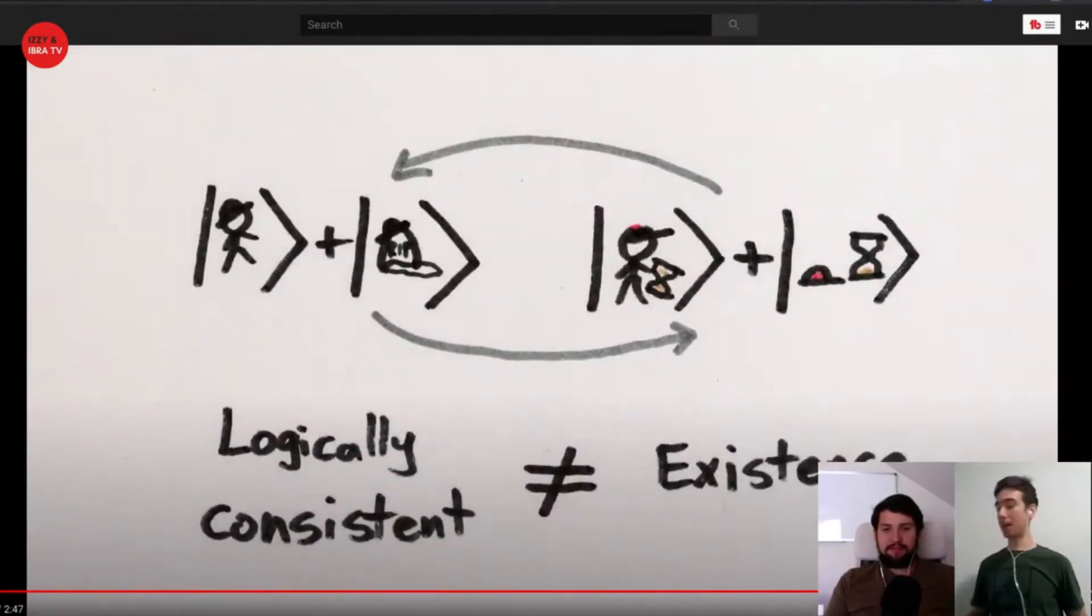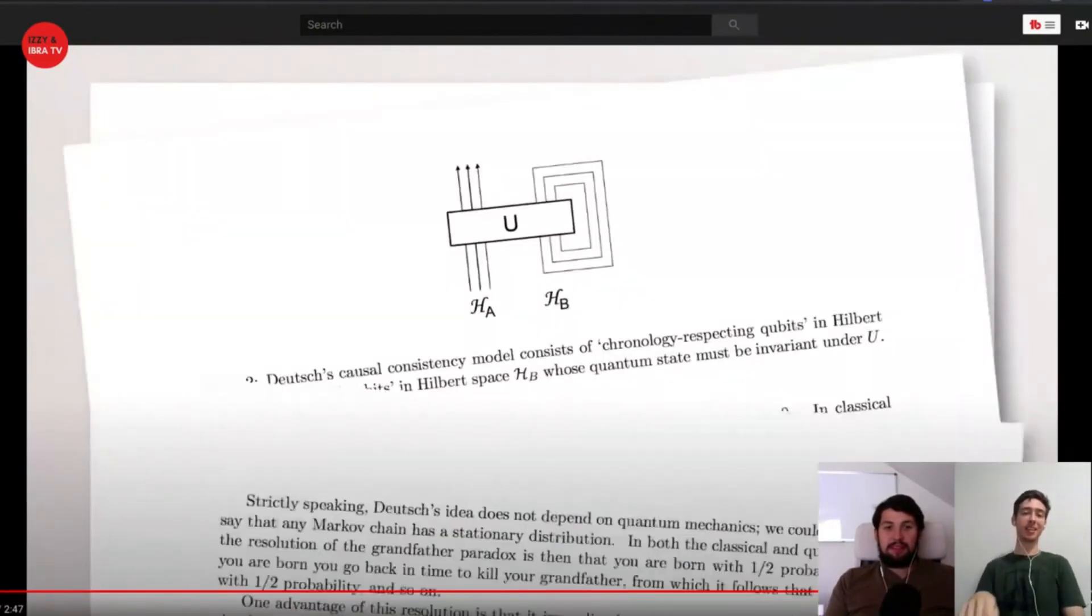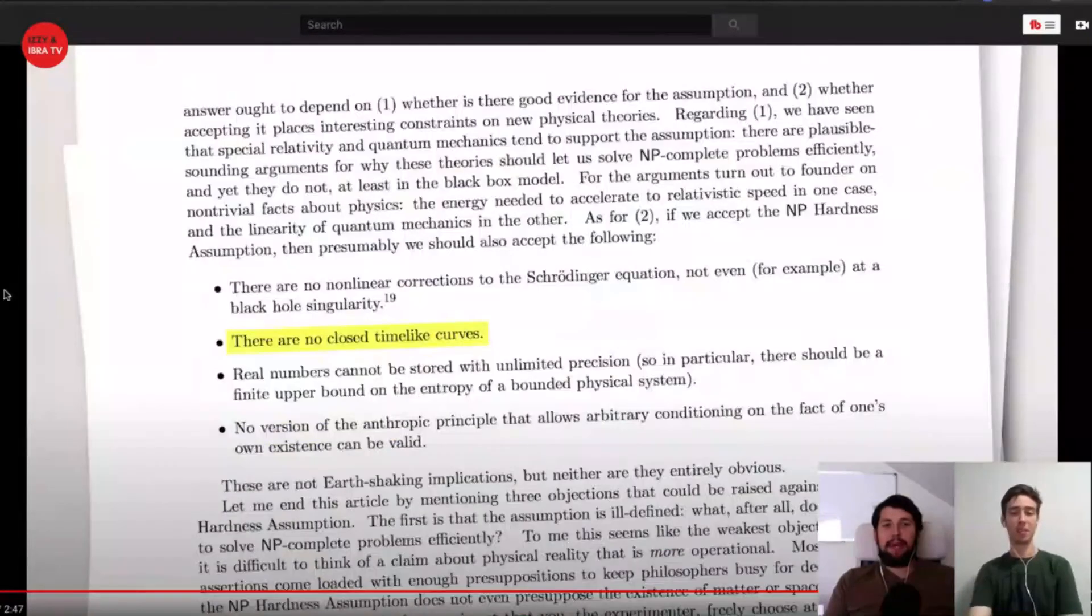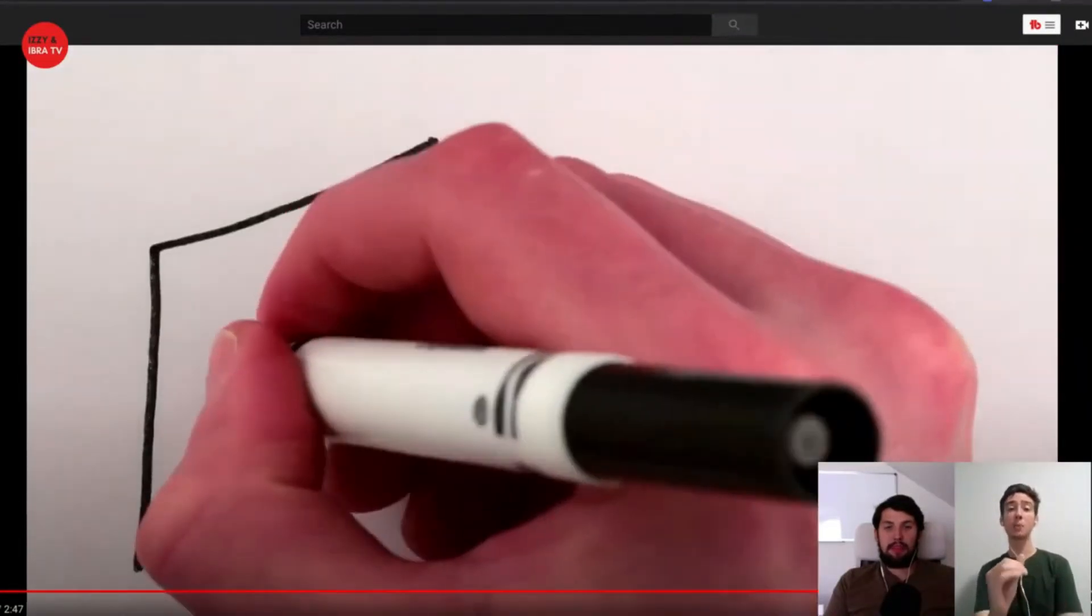Of course, nothing about these solutions to the grandfather paradox suggests that closed time loops are actually possible. In fact, some of the implications this kind of time loop have in the study of complexity—look at this, look at these papers. And thus time traveling must be impossible.